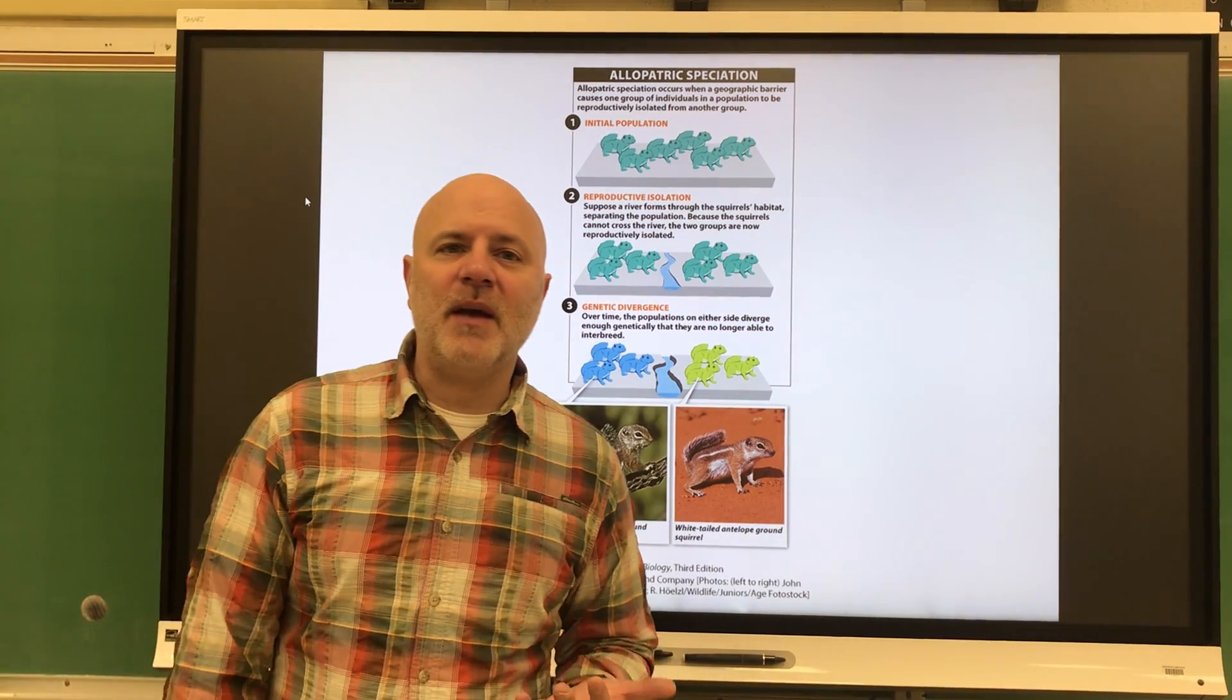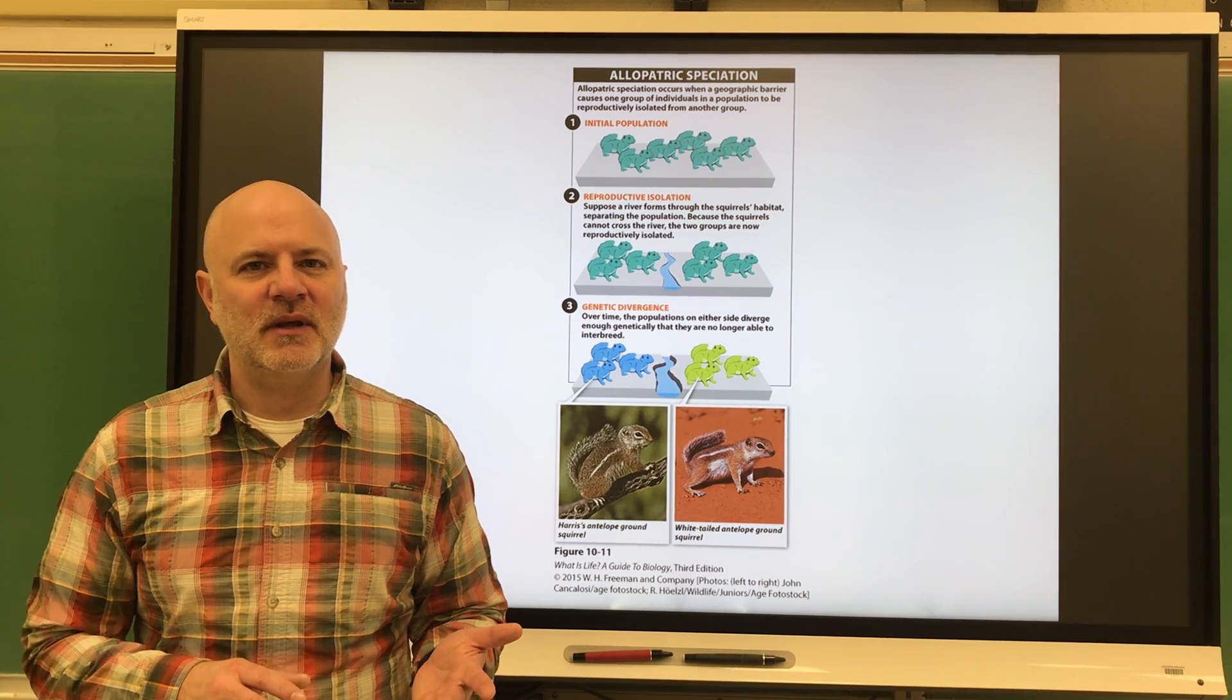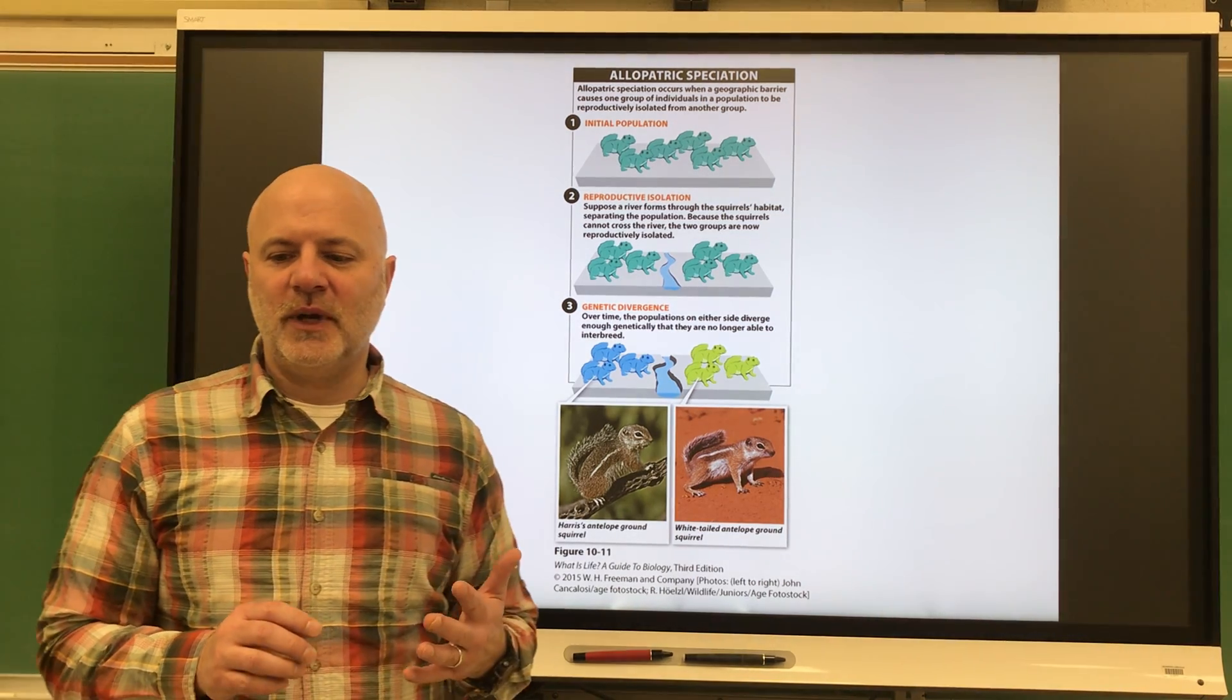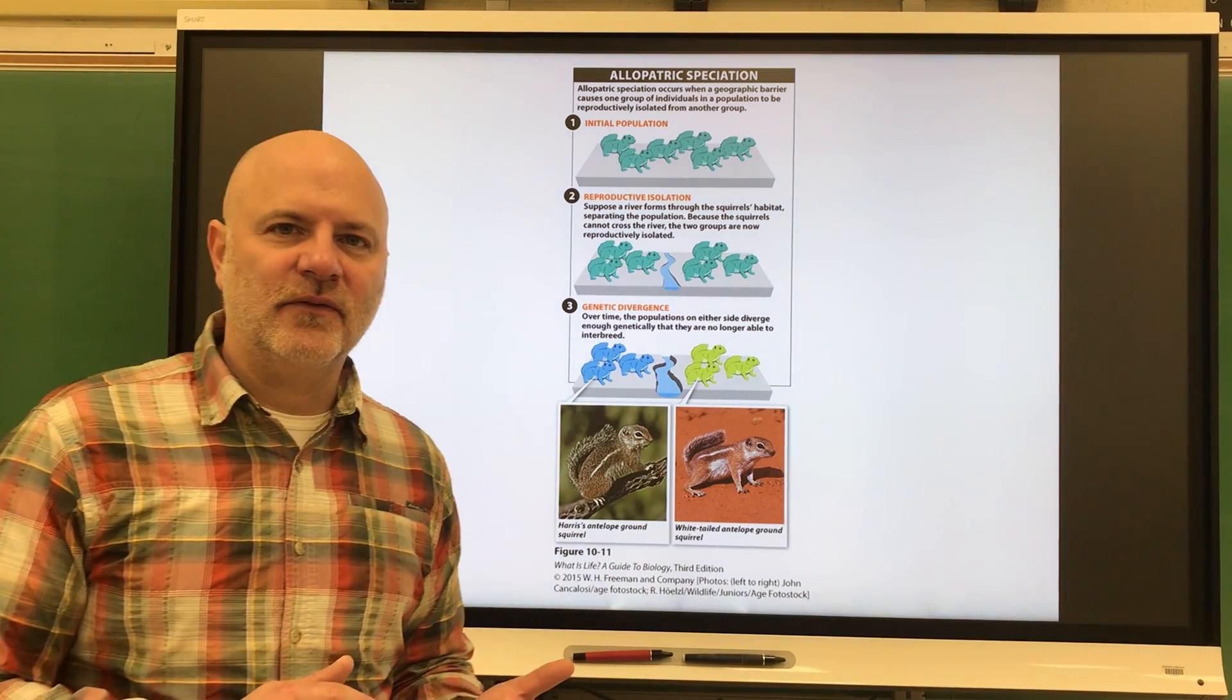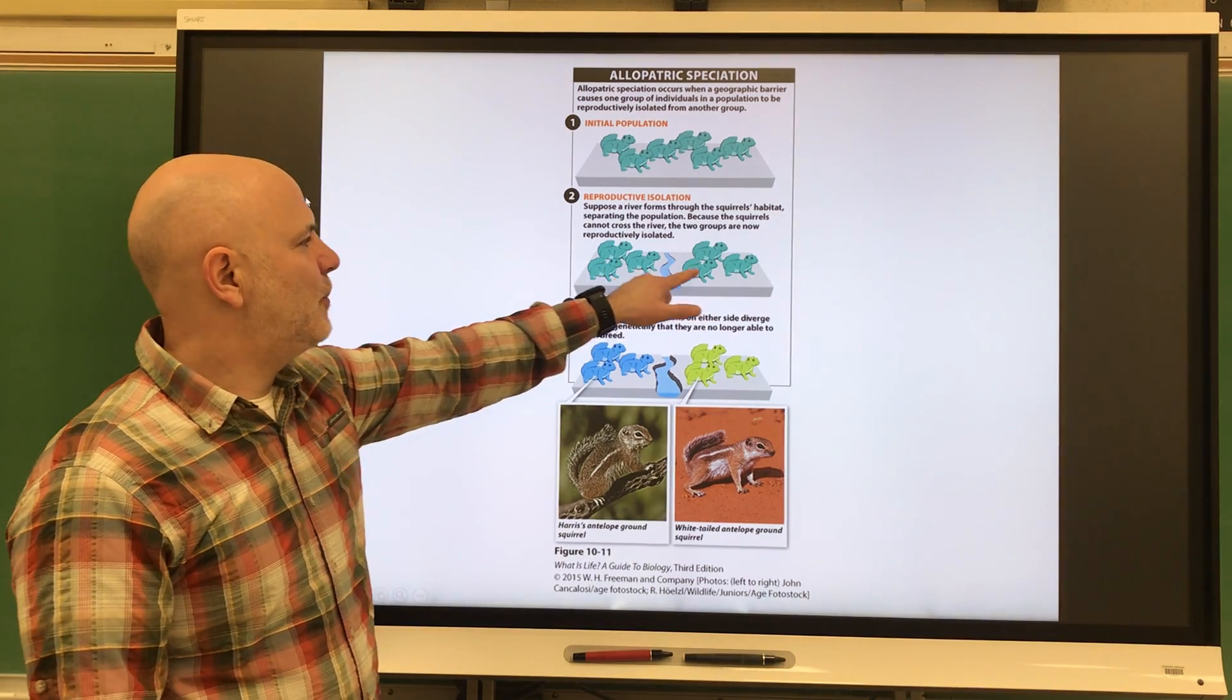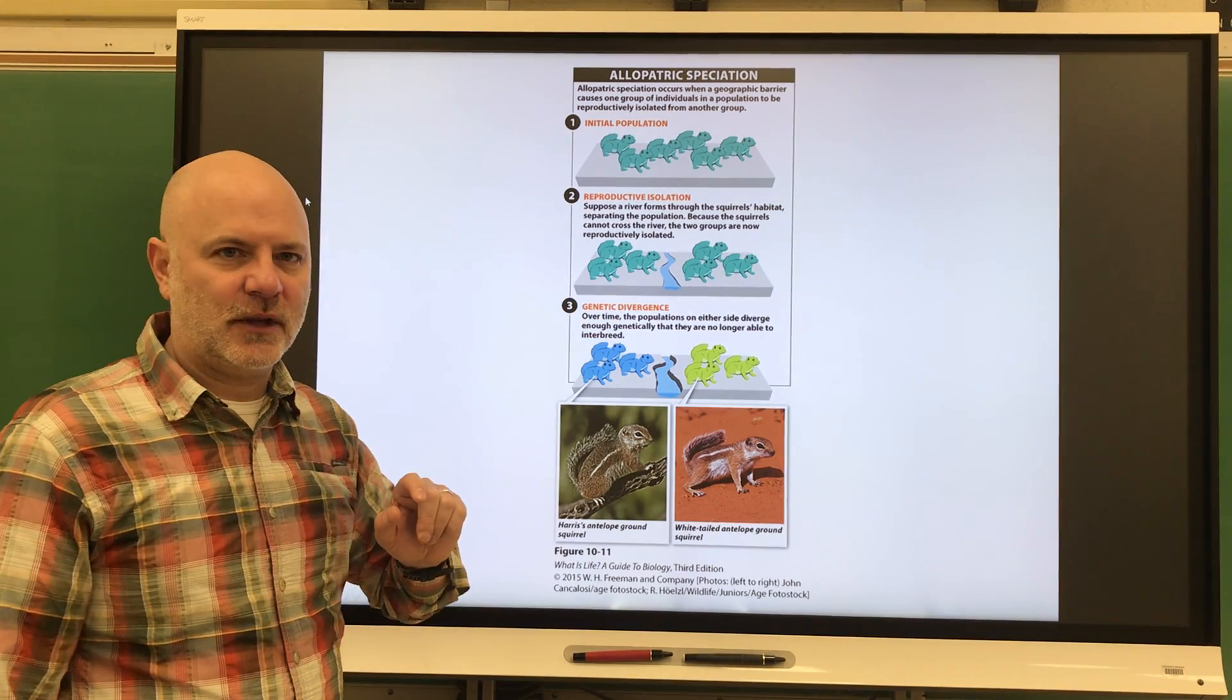The first type of speciation process is allopatric speciation. Allopatric speciation is speciation that occurs as a result of a geographic barrier between populations that leads to reproductive isolation and genetic divergence. Basically, we have two populations that are separated from each other and they can no longer interbreed with each other.